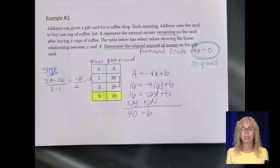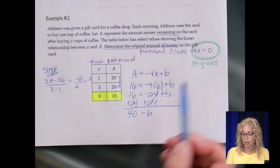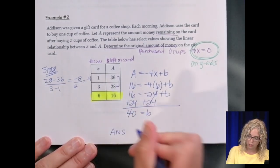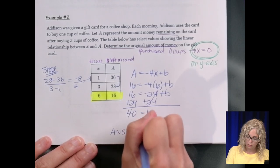So our y-intercept is 40. Again, that's where x is 0. So my answer, the original amount of money on the gift card, is $40.